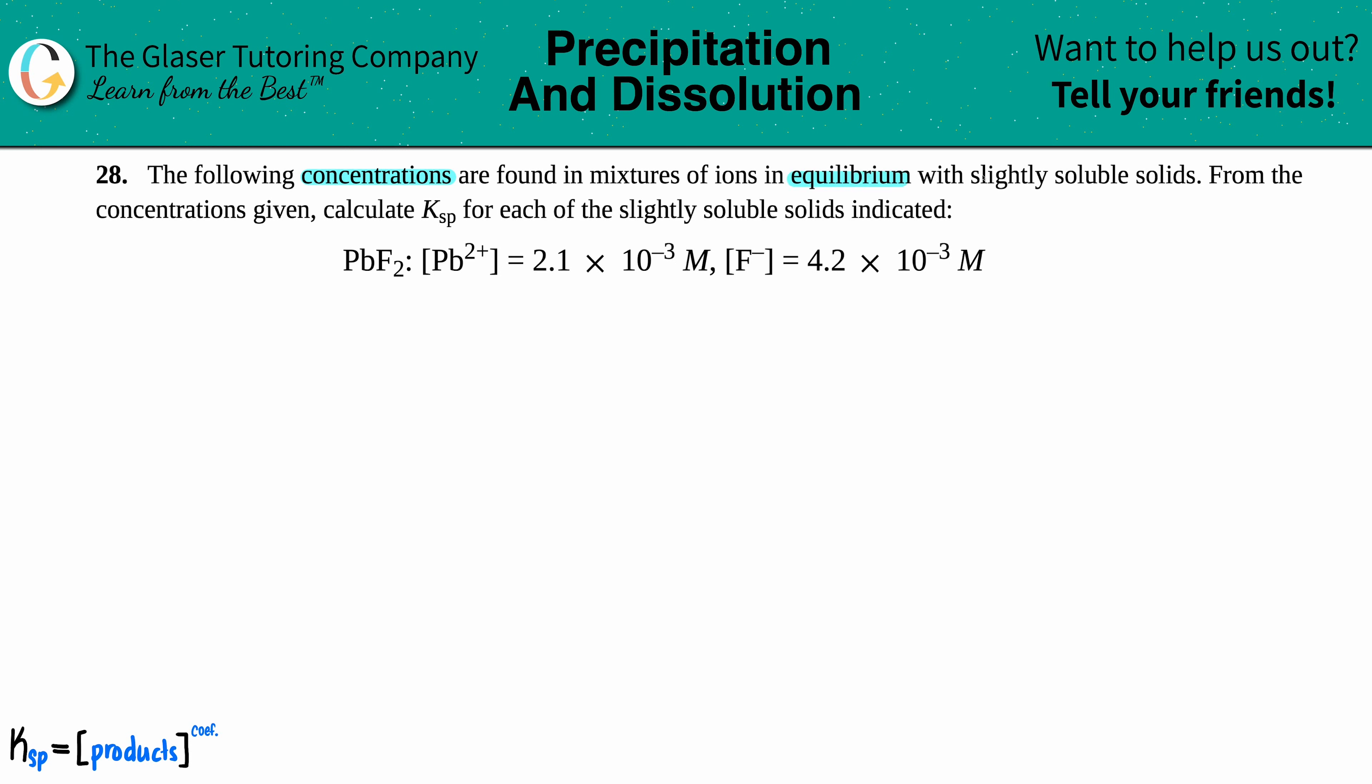Number 28: The following concentrations are found in mixtures of ions in equilibrium with slightly soluble solids. From the concentrations given, calculate the Ksp for each of the slightly soluble solids indicated. We have lead fluoride, PbF2. They tell us that the lead concentration, Pb2+, is 2.1 times 10 to the negative third molarity, and the fluoride ion concentration, F-, is 4.2 times 10 to the negative third molarity.